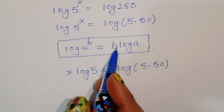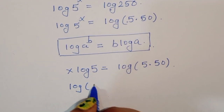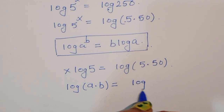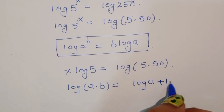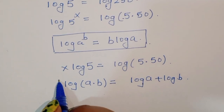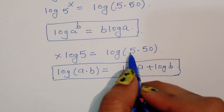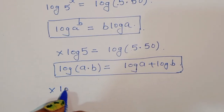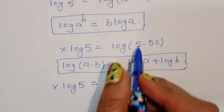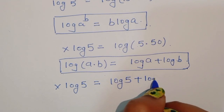We also know the formula that log of a times b is equal to log of a plus log of b. Using this formula, we get x times log of 5 is equal to log of 5 plus log of 50.